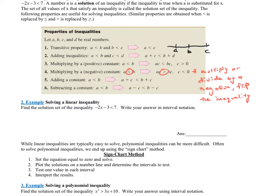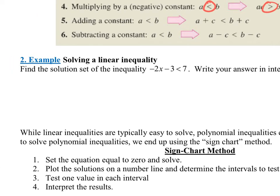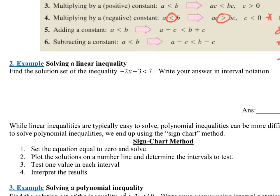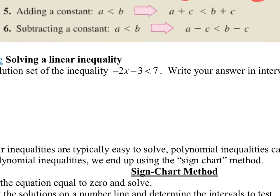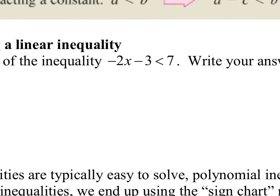Let's put these rules to work. You do not need to know the names of these properties — it's just reminding you what tools you have to solve these problems. Find the solution set of the inequality negative 2x minus 3 is less than 7. We need to write our answer in interval notation because there's going to be an infinite number of answers. Start by adding 3 to both sides to isolate x. When I do that, I get negative 2x is less than 10.